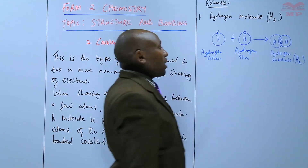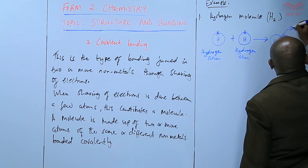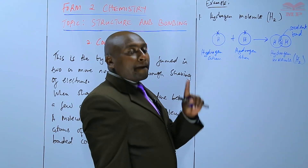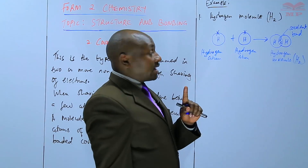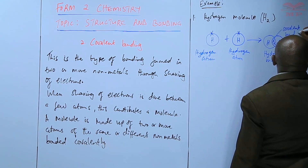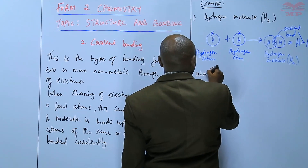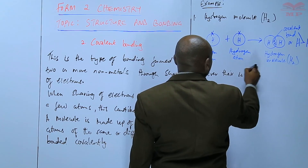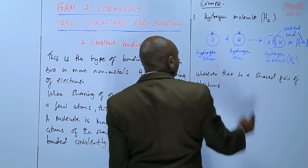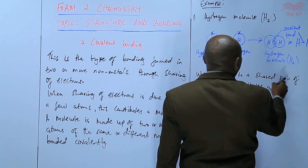What has been formed is now a hydrogen molecule, H2 — made of two atoms. The covalent bond is where the sharing is happening; that is where the shared pair of electrons is. Wherever there is a shared pair of electrons, there is a covalent bond. This can also be represented as H—H.